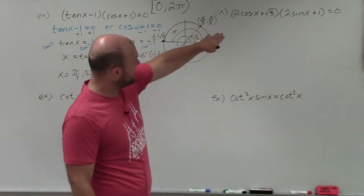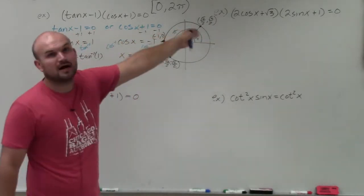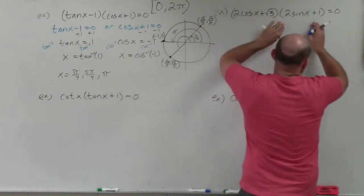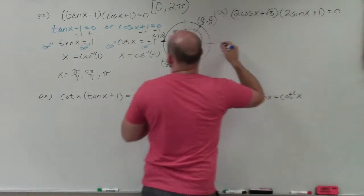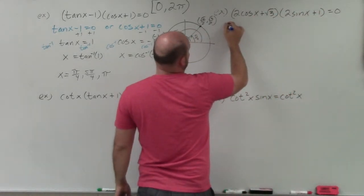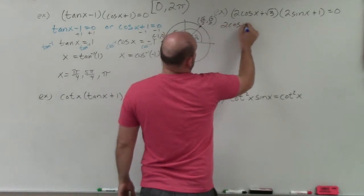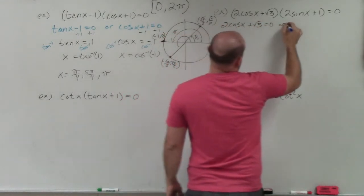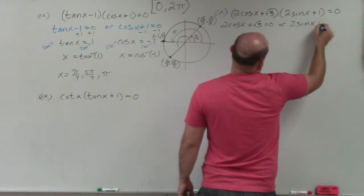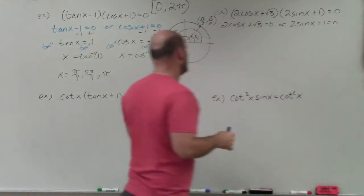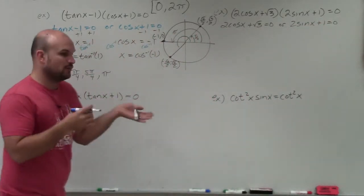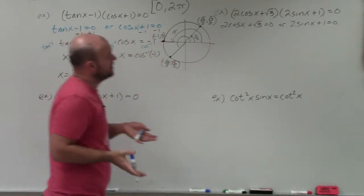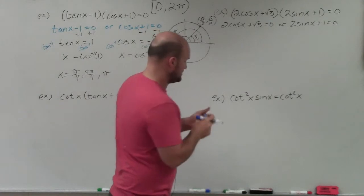Now we have another example — here we just have a little extra inverse operations. We have a product of expressions equal to 0, so I'm going to apply the zero product property again. I'll say 2cosine(x) + √3 = 0, or 2sine(x) + 1 = 0. Remember, the 'or' is a conjunction — it could be one or the other or both, and we use both to form our solution set.